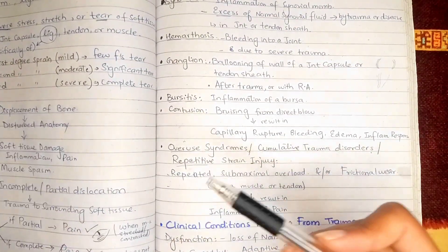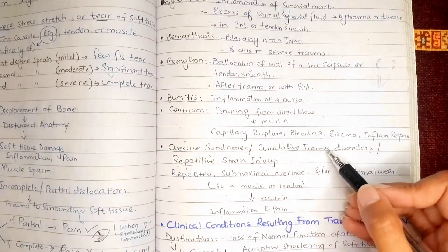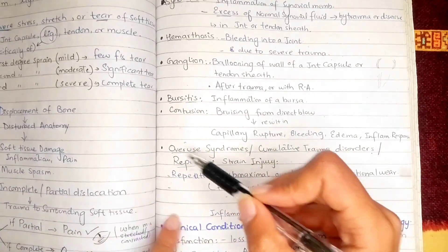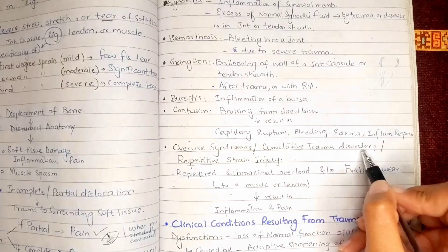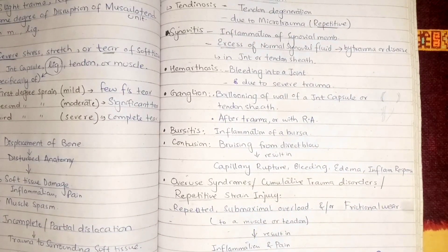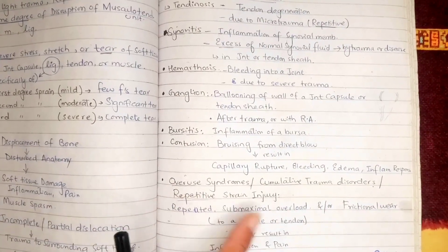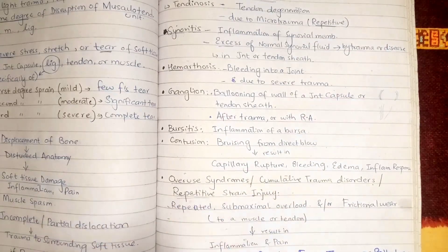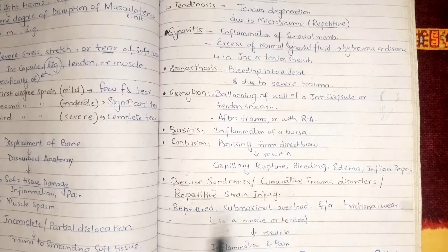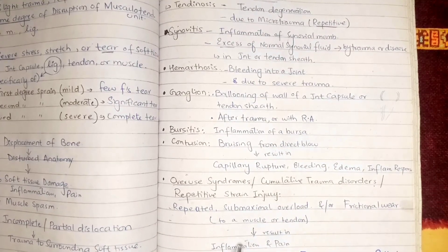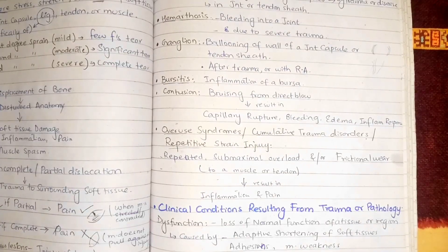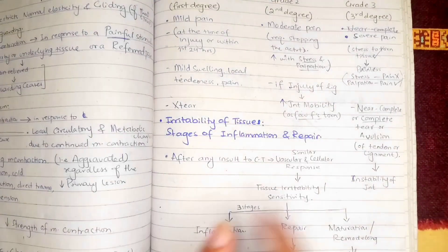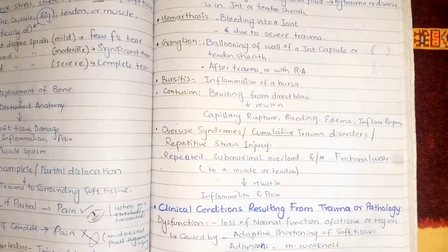Overuse syndrome is also known as cumulative trauma disorders or repetitive strain injury. These all share a common theme: repeated submaximal overload or frictional wear to a muscle or tendon, resulting in inflammation and pain. In the next video we will discuss clinical conditions resulting from trauma and pathology, severity of tissue injury, irritability of tissues, and more. Thank you, until next time.